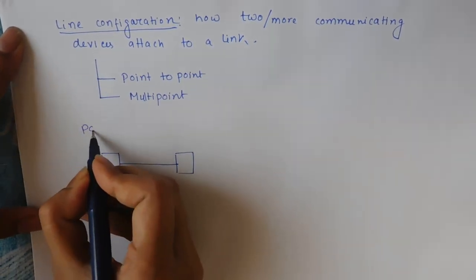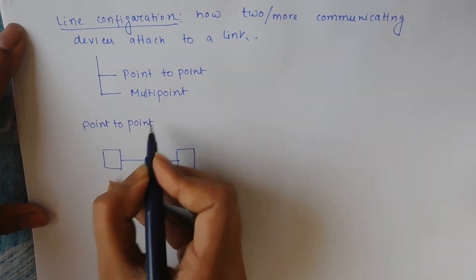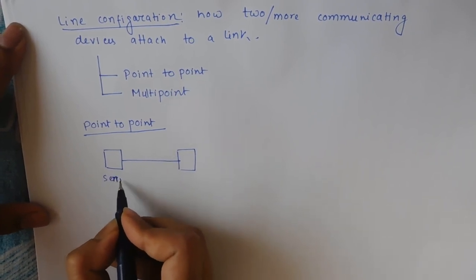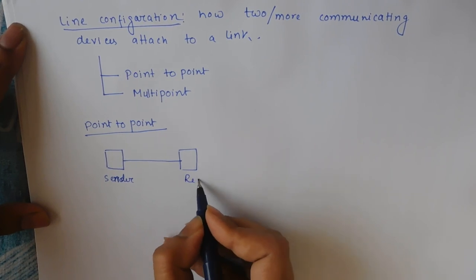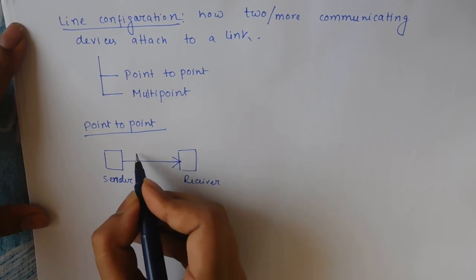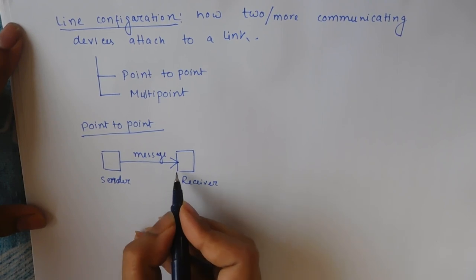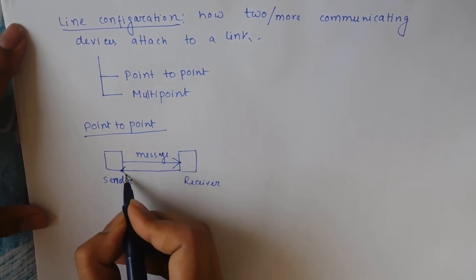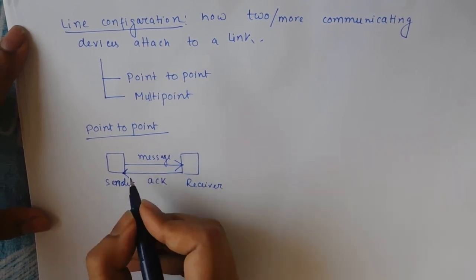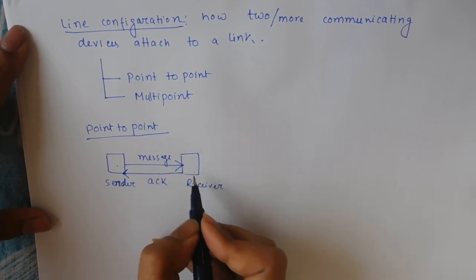For point-to-point configuration, there is a sender and a receiver. The sender sends a message and the receiver sends an acknowledgement message back. This ensures that the message sent by the sender was received by the receiver.